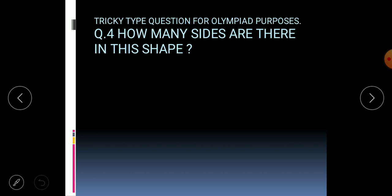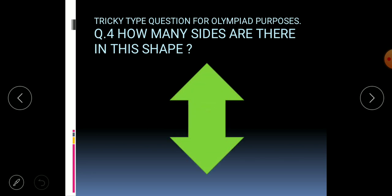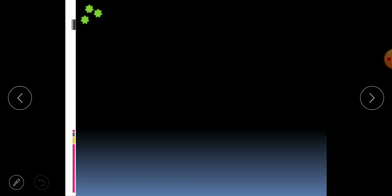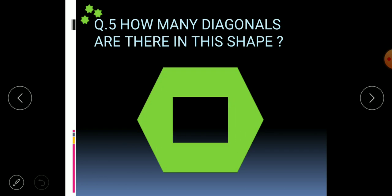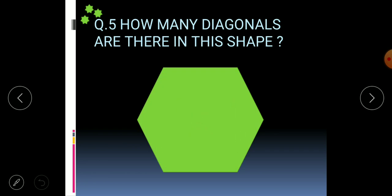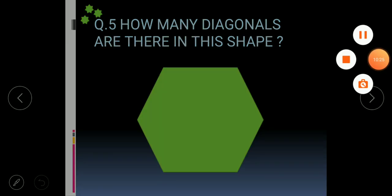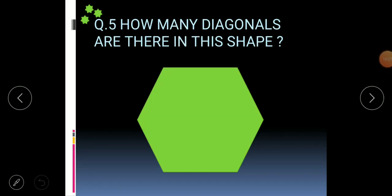Now see some tricky questions for Olympiad exams: how many sides are there in this shape? And how many diagonals are there in this shape? Draw the shapes in your copy, find out the answers, and send me the picture of your homework to my WhatsApp number.